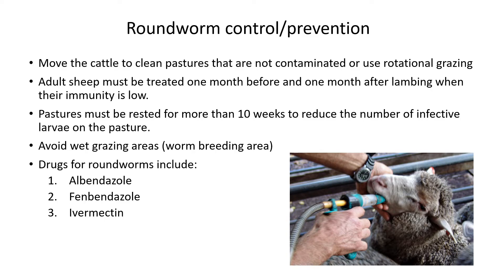Pastures must be rested for at least 10 weeks to reduce the number of infected larvae. Avoid wet areas where worms like to breed. Drugs that can be used to dose animals against roundworms include several options — the most common one used in South Africa, particularly in the Eastern Cape, is ivermectin, which is commonly sold at agricultural stores.